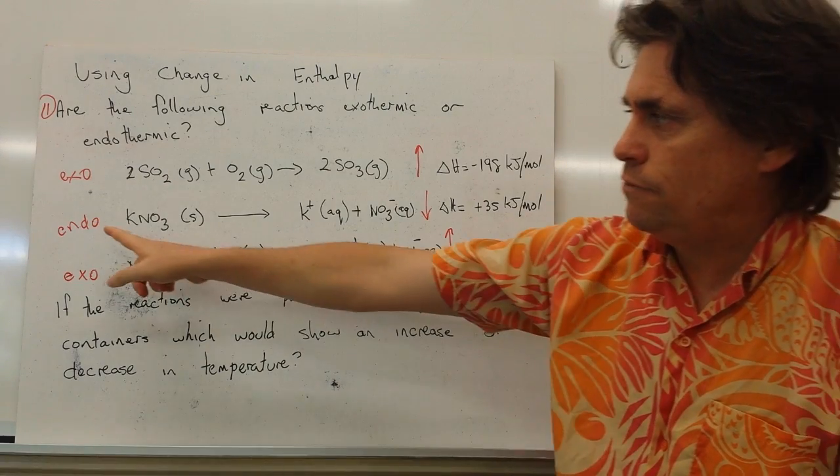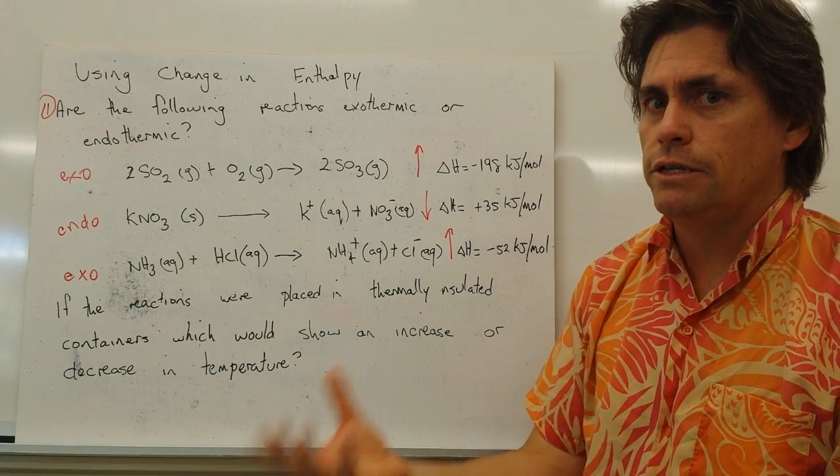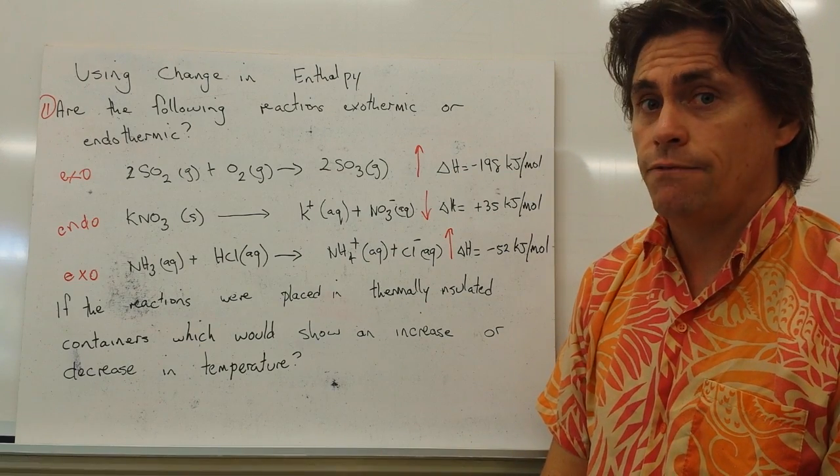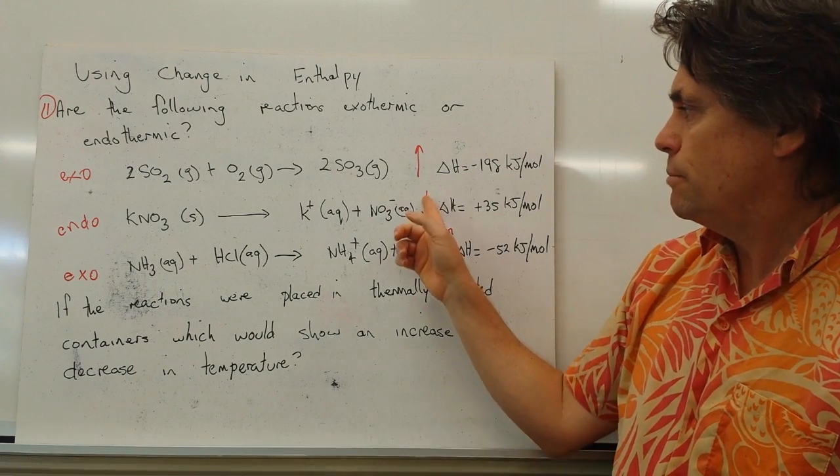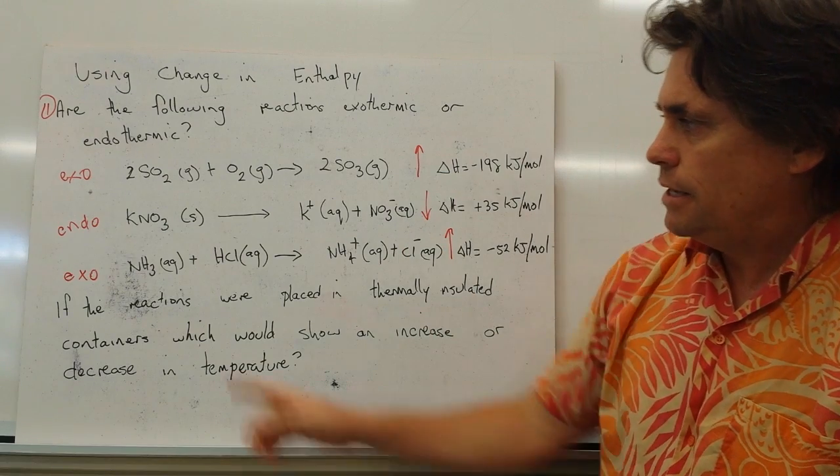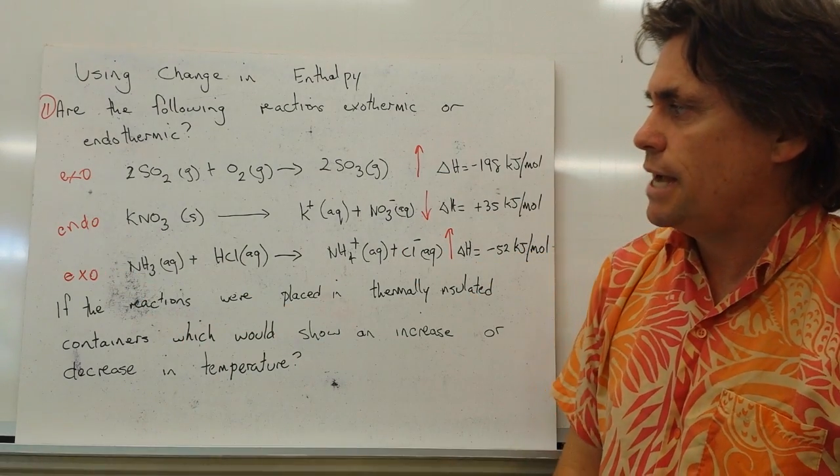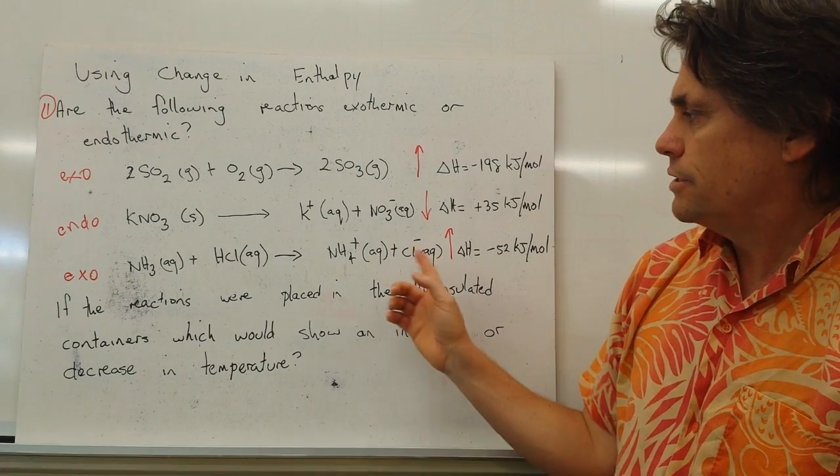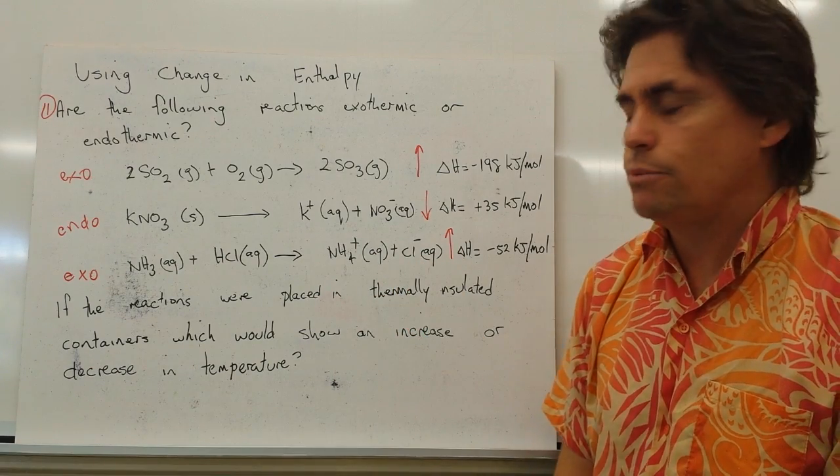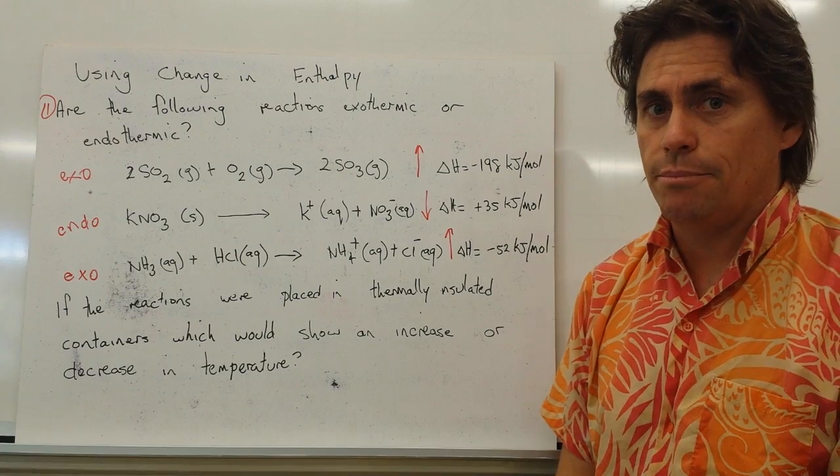In contrast, if we have an endothermic reaction, it's going to feel cold. So it's going to take heat from the environment, so the temperature will drop. And in our third one, we've got an exothermic reaction once again. It's going to give heat out. Therefore, the measurement that we make will be an increase in temperature.